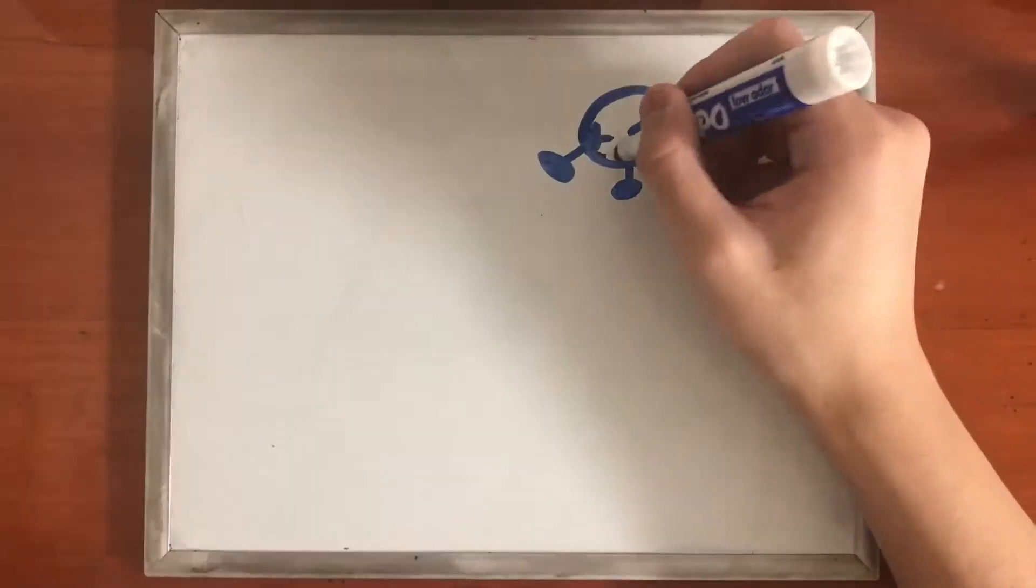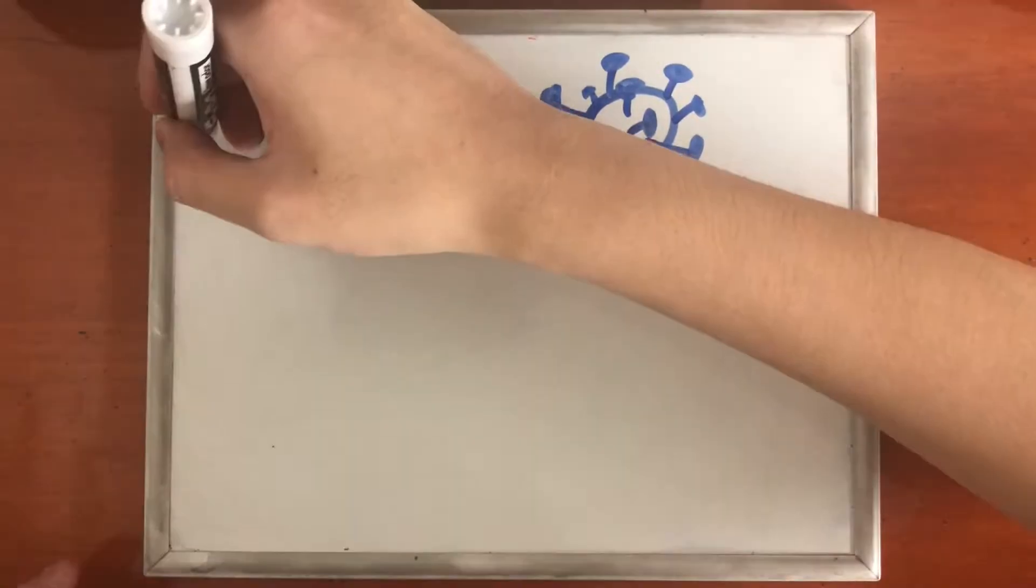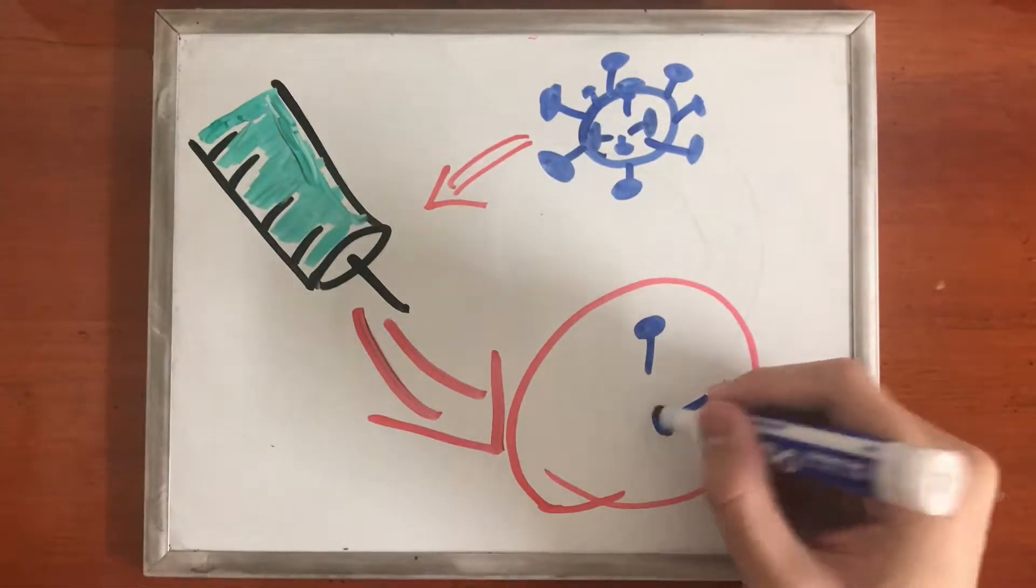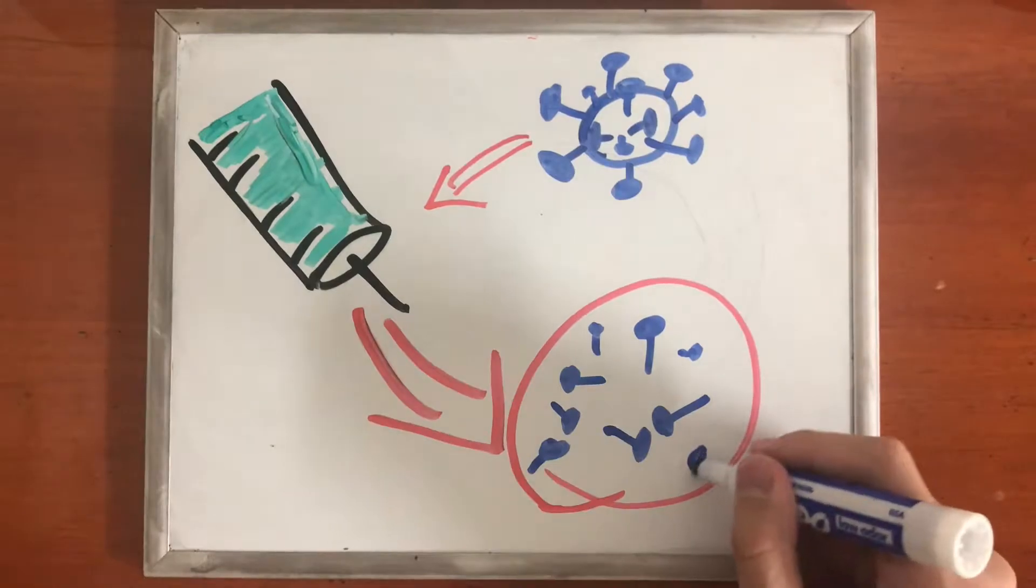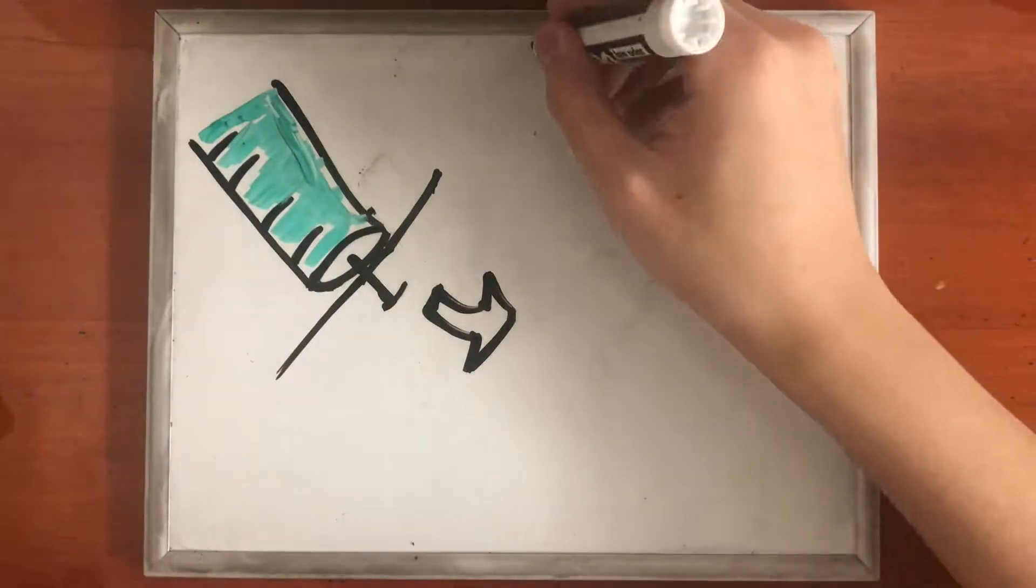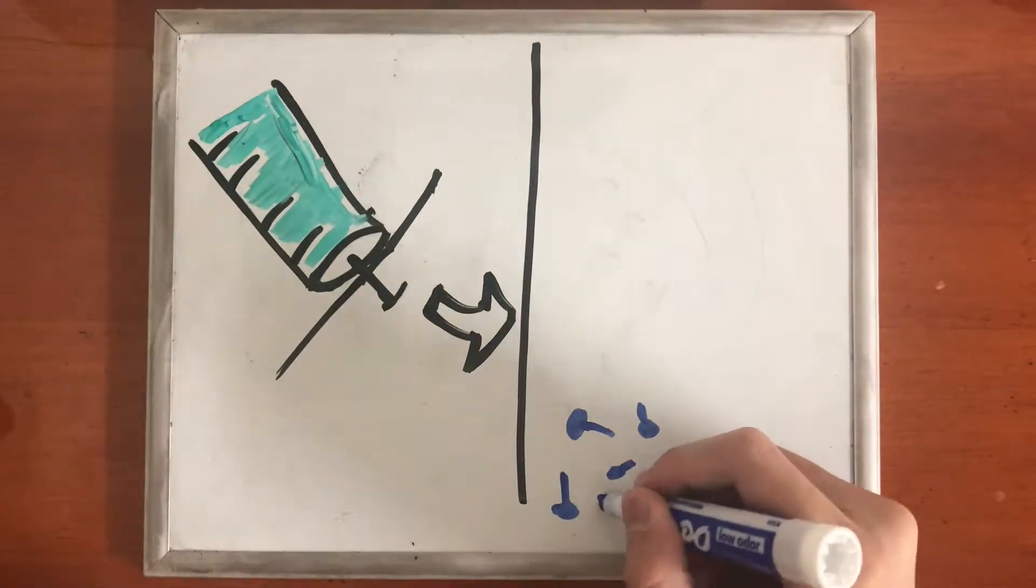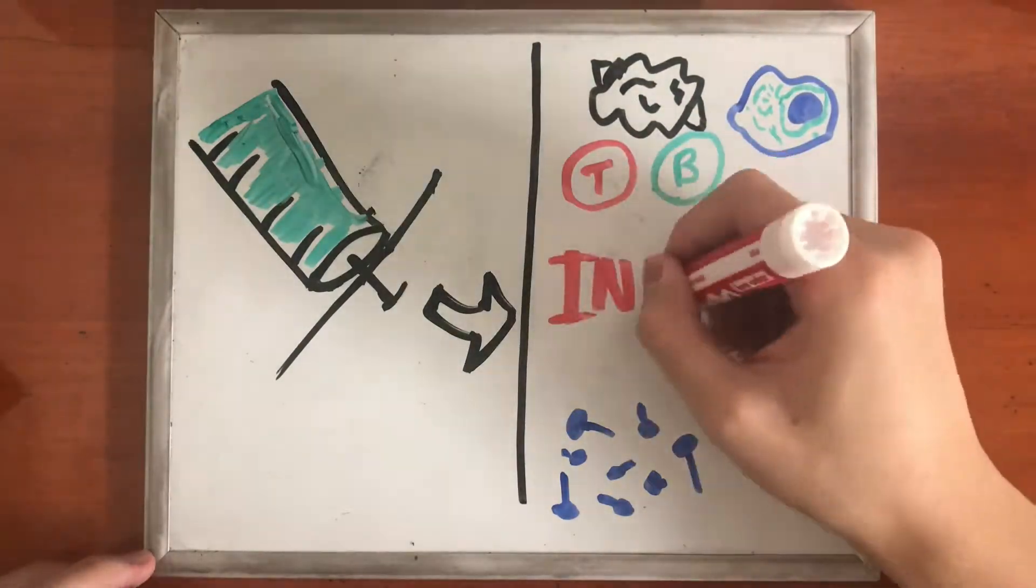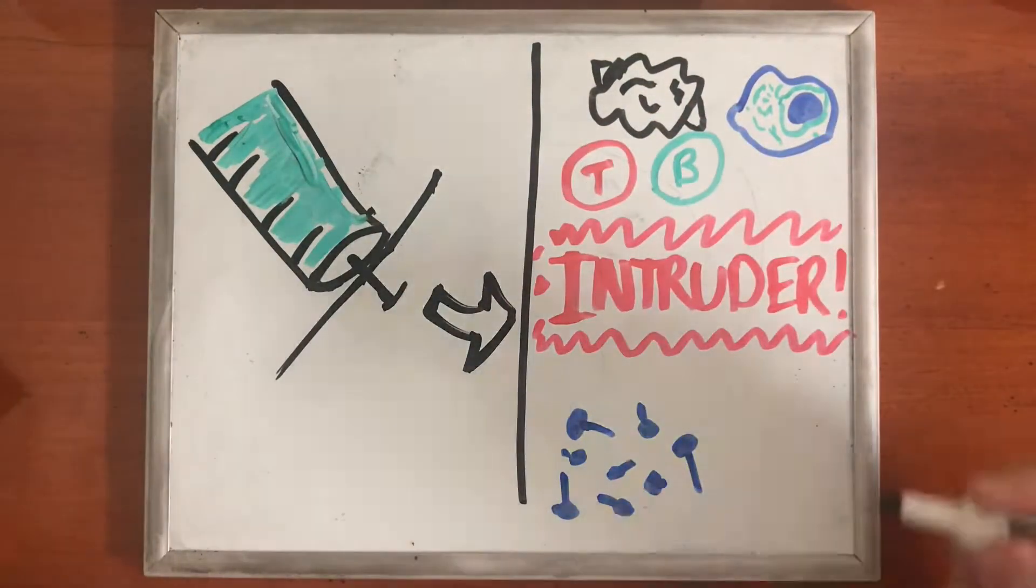Vaccines operate under this very same principle, a major plus being that there's no actual threat to experience. Vaccines inject a weakened or dead part of a specific disease-causing germ, usually this would be the antigen, also known as the cell's name tags for the body to recognize other cells. It has to be enough to be recognized as a threat for the immune cells to neutralize it.